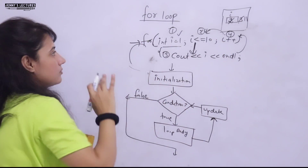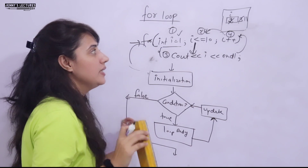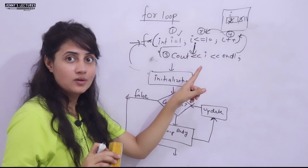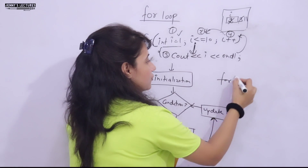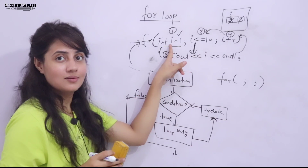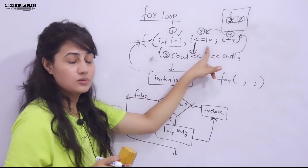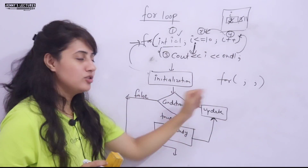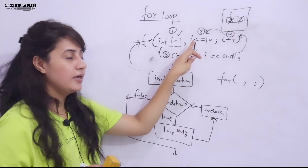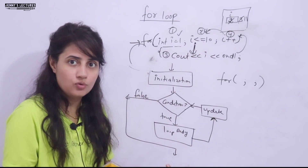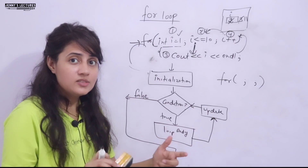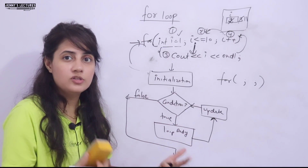The basic syntax allows multiple variations. It's not compulsory to write all three expressions in the for loop — they are optional. You can write something like: for(;;) — the two semicolons are compulsory but the expressions are optional. You can omit initialization, or the condition, or the update, or any combination. These kinds of questions are asked in interviews and competitive exams.